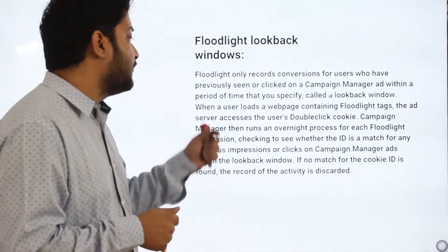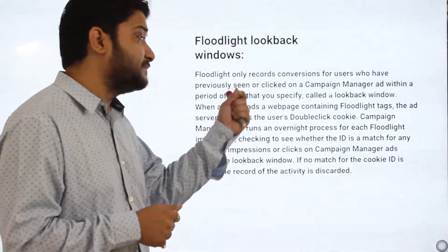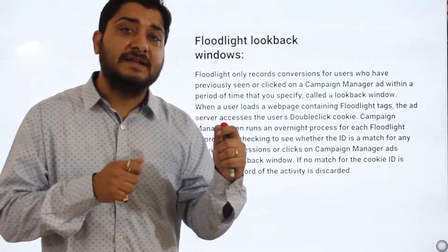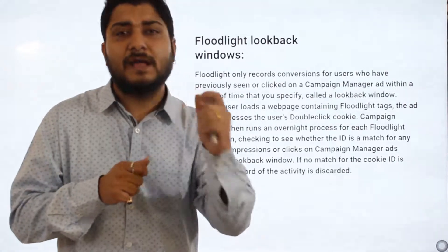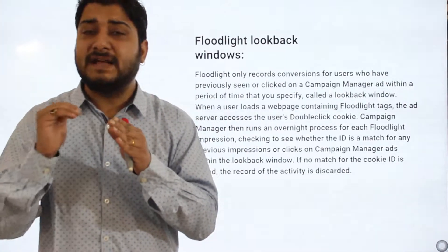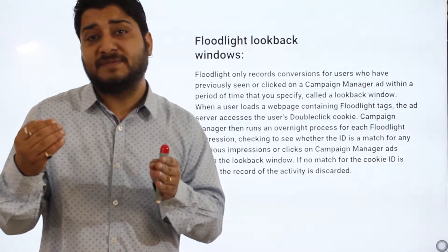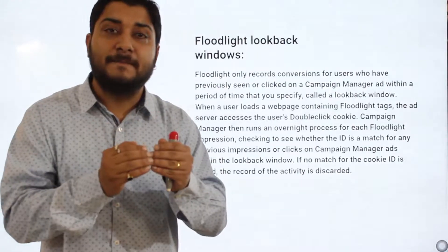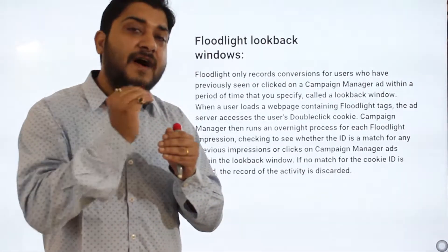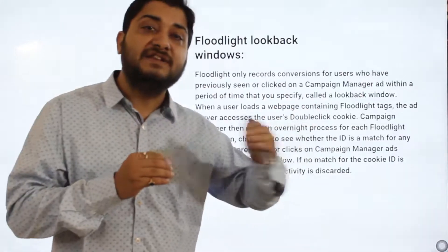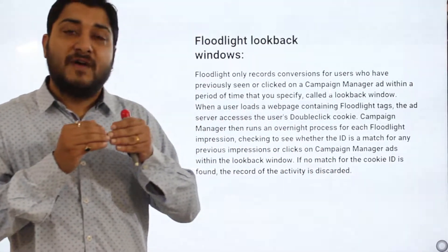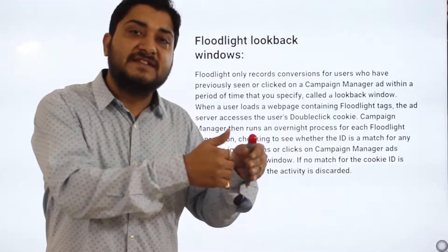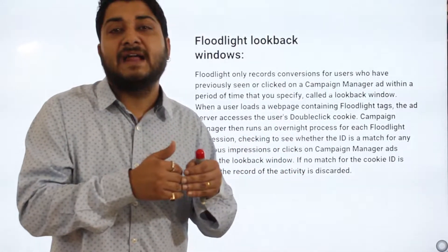Floodlight only records conversions for users who have previously seen or clicked on a Campaign Manager ad within a period of time that you specify — that is called the Look Back Window. When a click happens and the user lands on your website or app, it triggers the Floodlight to fire. Once it fires, you tell Floodlight to go back and check whether within a specific defined period of time this user has interacted with the ad.